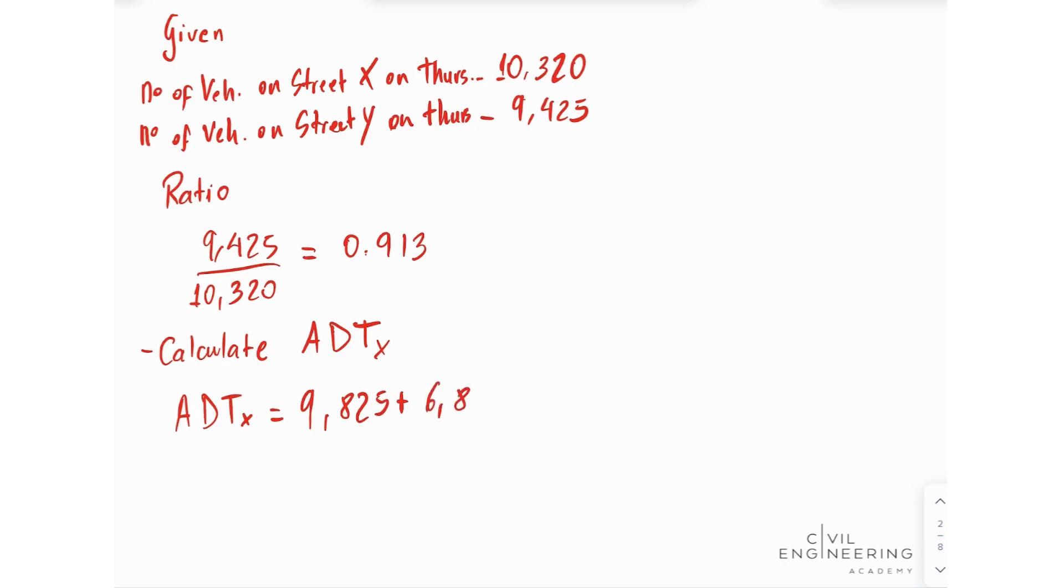6,890 plus 11,785 plus 8,280 plus 9,330 plus 10,320 plus 10,200. So all of these divided by 7 days. And we're going to find that our average daily traffic for street X equals 9,518.57.